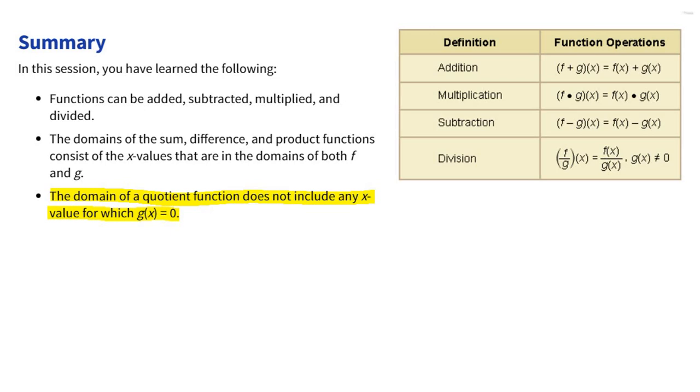So arithmetic combinations, you can add functions together, multiply them, subtract them, divide them. The big thing here, and I highlighted yellow, when you divide, you can't divide by zero, and so if you've got some variable in your denominator, that might limit your domain.